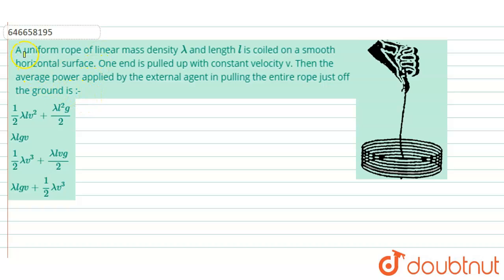Hello everyone, let us try to solve the given problem. The problem states: a uniform rope of linear mass density lambda and length l is coiled on a smooth horizontal surface. One end is pulled up with a constant velocity v. We need to find the power applied by the external agent in pulling the entire rope just off the ground.